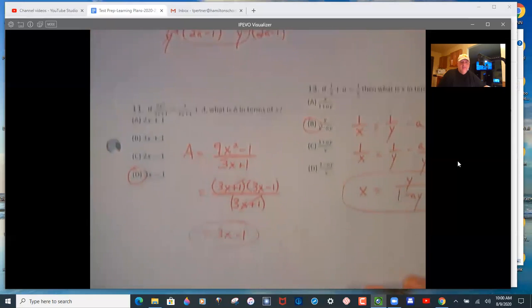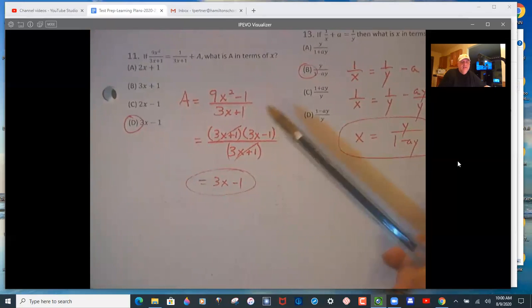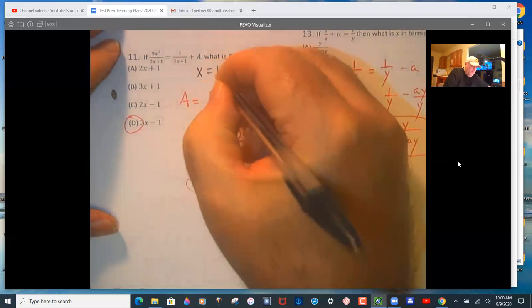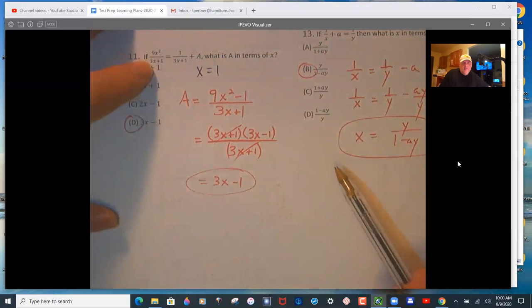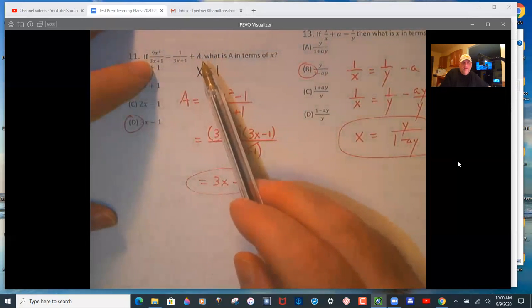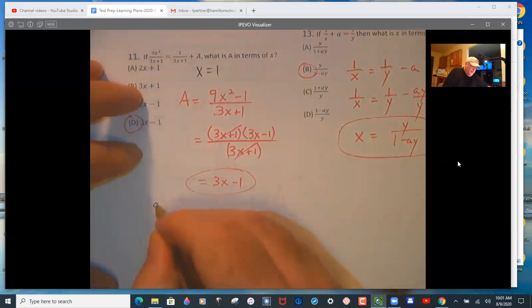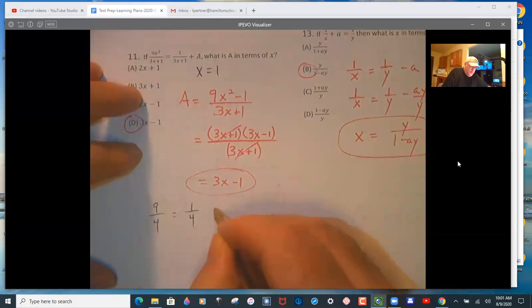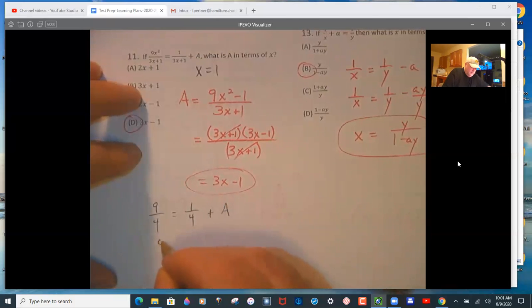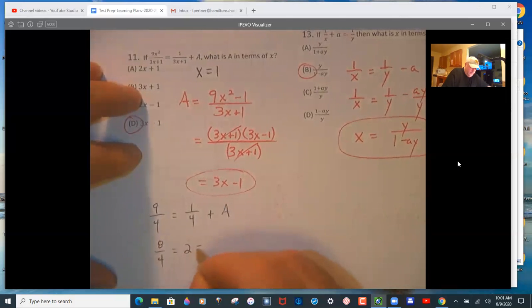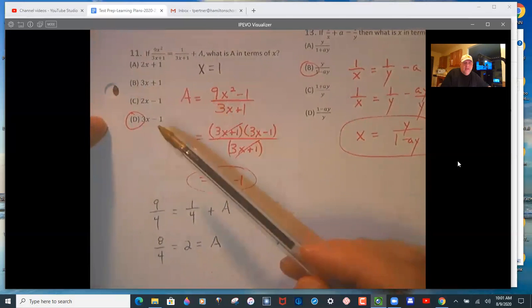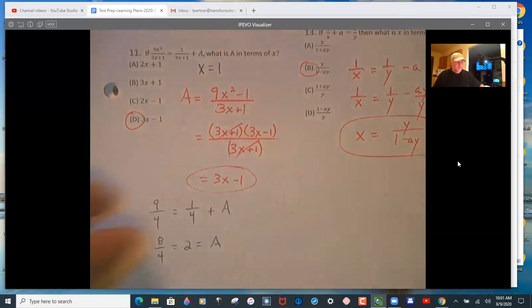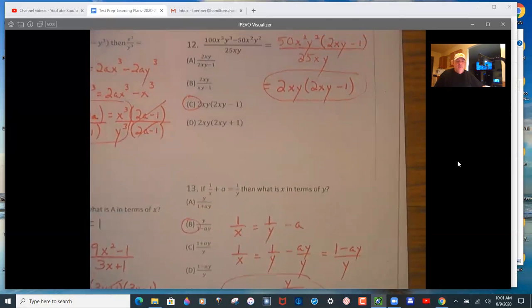And I would not expect people to get that. So here we go with, you know, pick your favorite number. So let's say 1. x equals 1. Why not try x equals 1? And you're going to get 9 over 4 equals 1 over 4 plus what? You know, so 9 over 4 equals 1 over 4 plus what? Well, that's 8 over 4. Which is 2. So which one of these, when x is 1, gives you 2? It's D. So the numbers game is a great thing to play when you can.